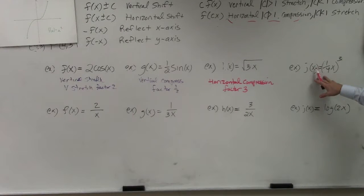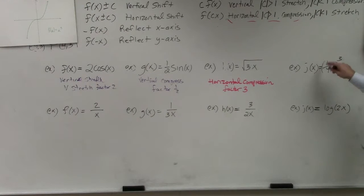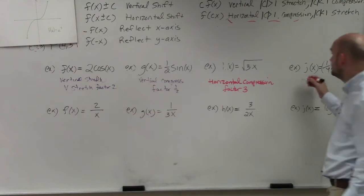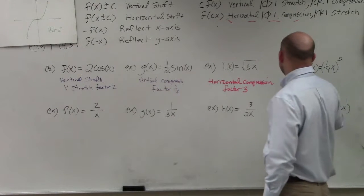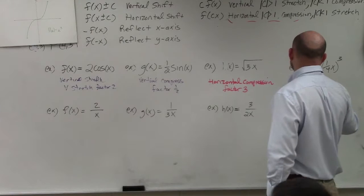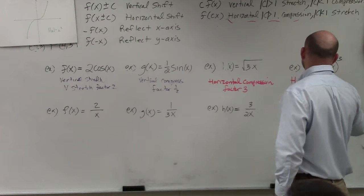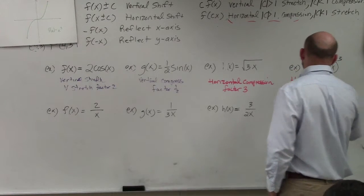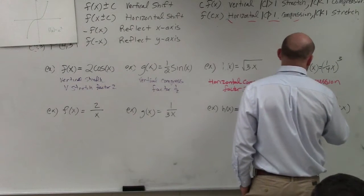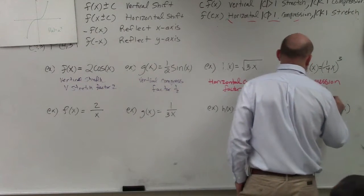On to the next one. I'm multiplying by one fourth — that's inside the parentheses, inside the function. So therefore it's a horizontal compression, factor of one fourth.